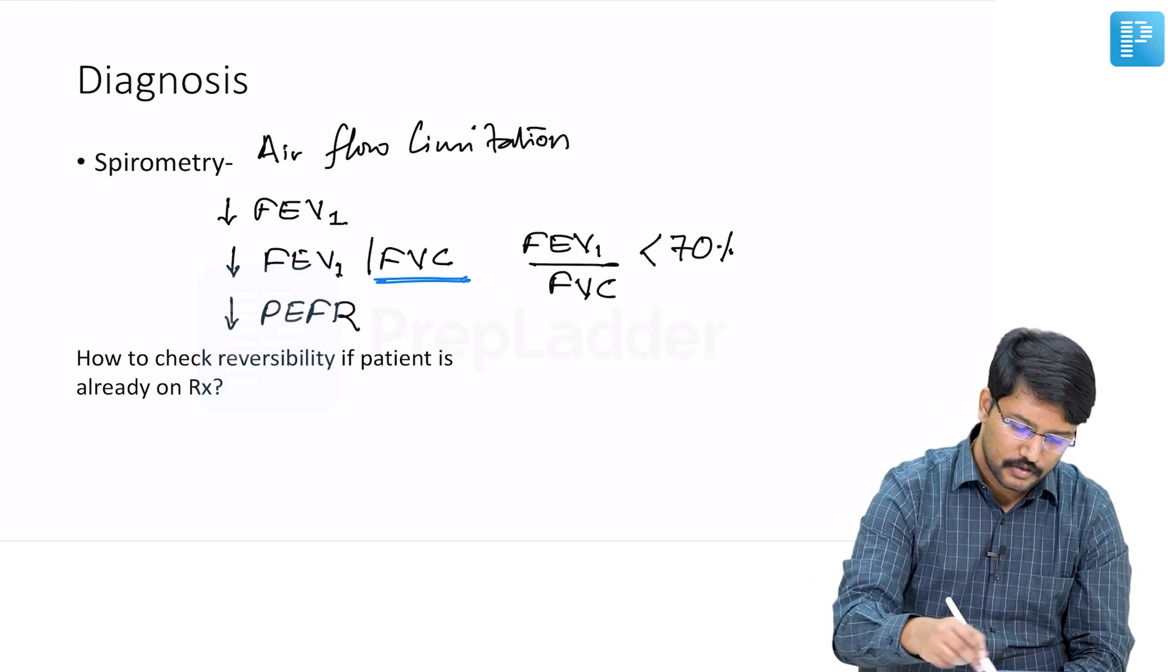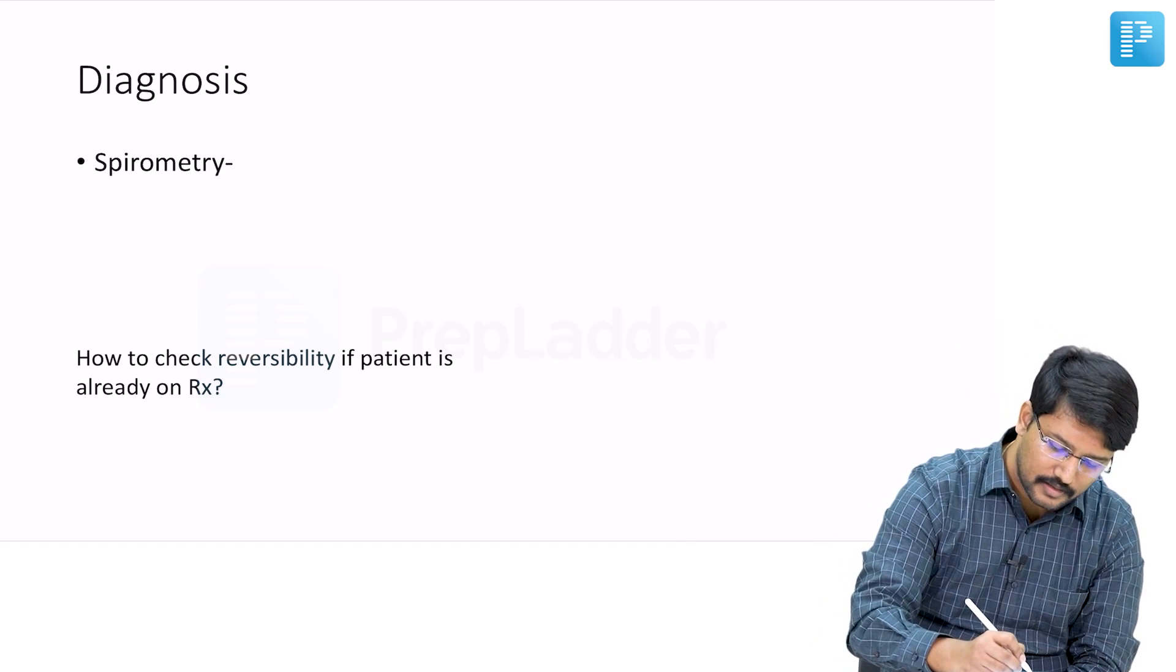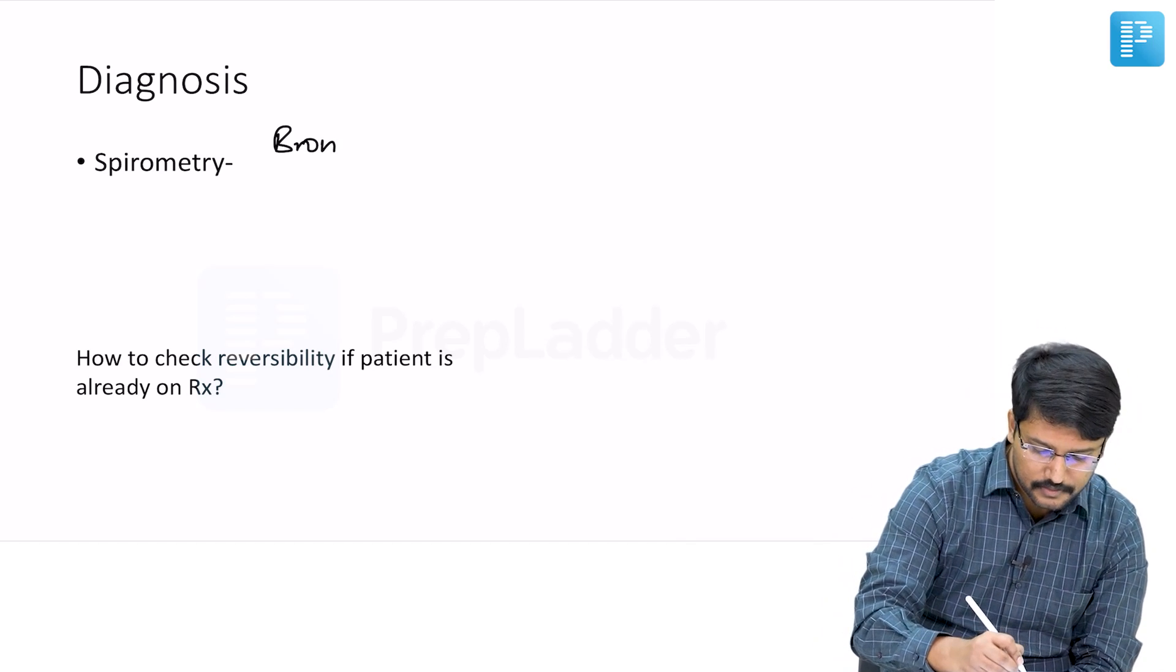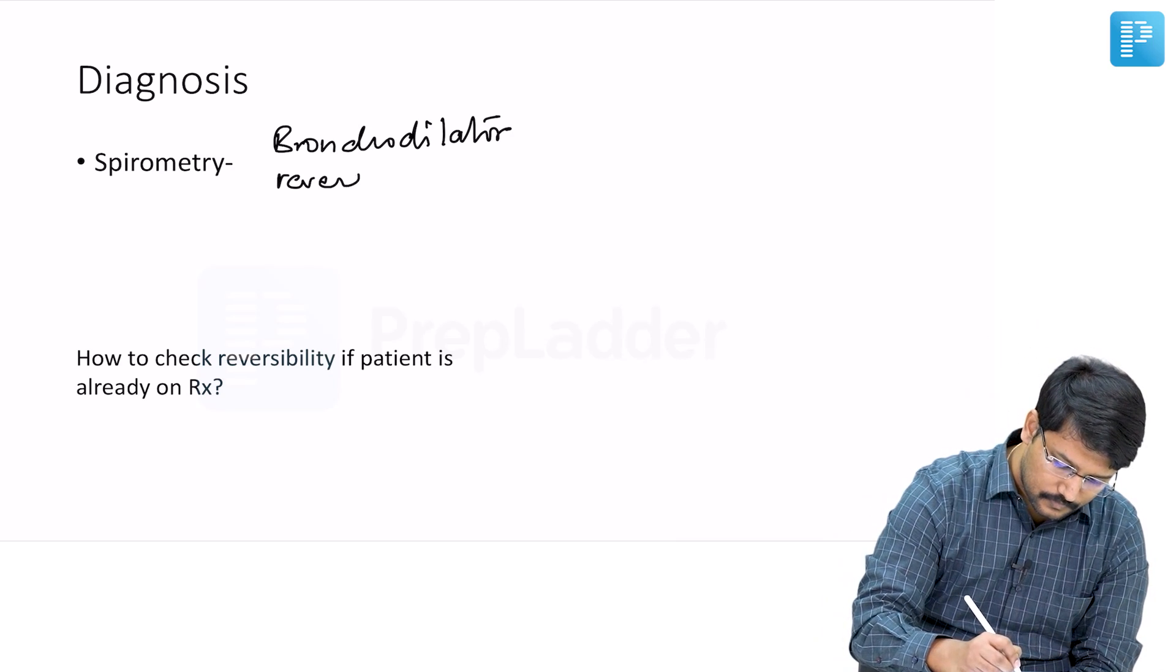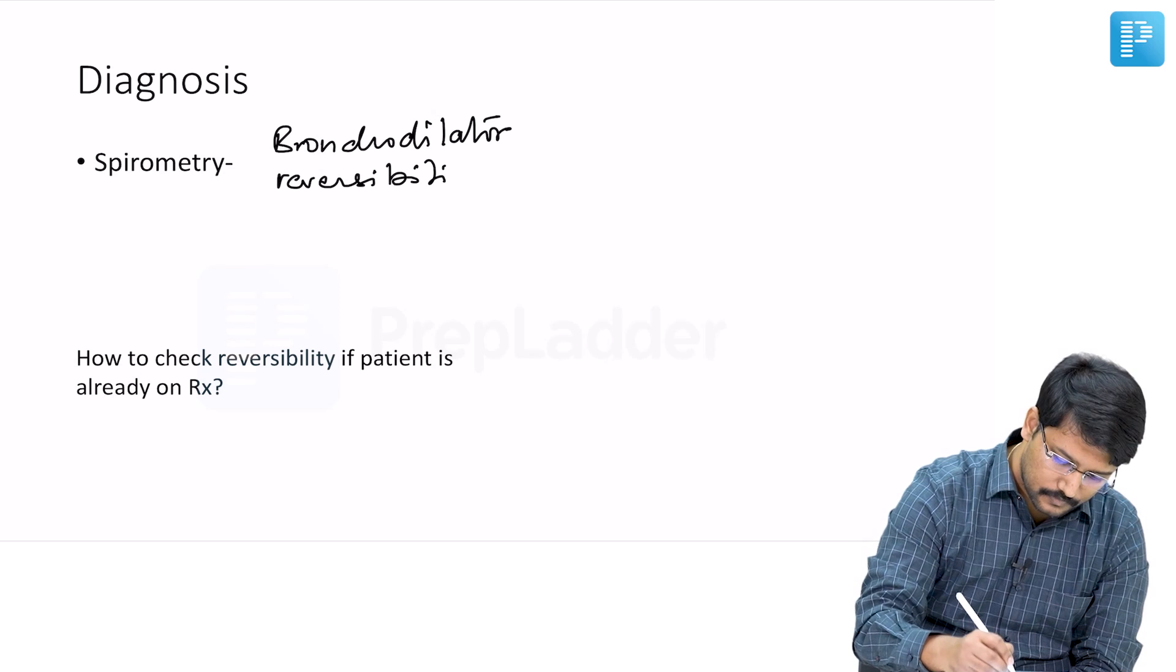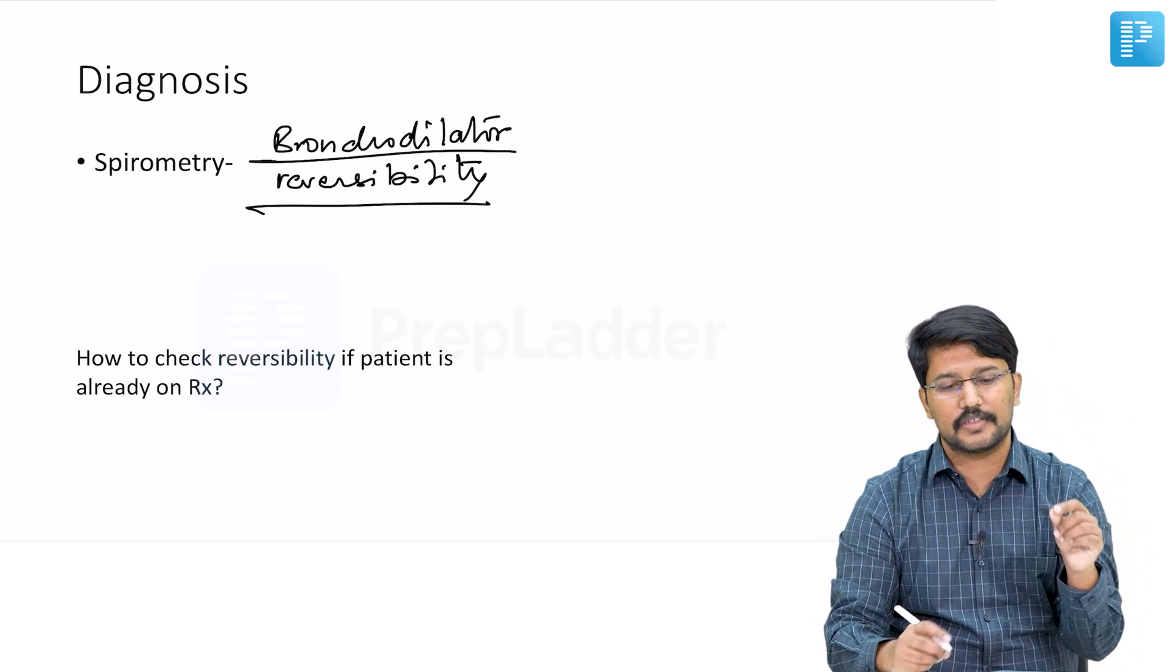But how do you strongly prove that the particular patient is asthmatic? That is by demonstrating bronchodilator reversibility.